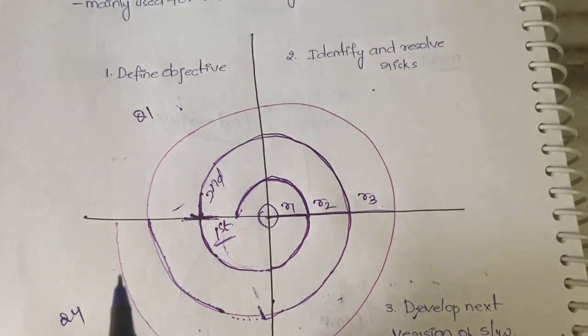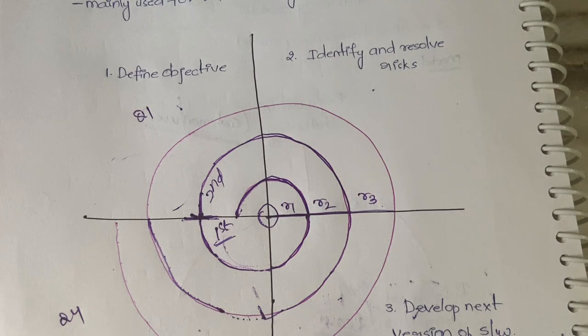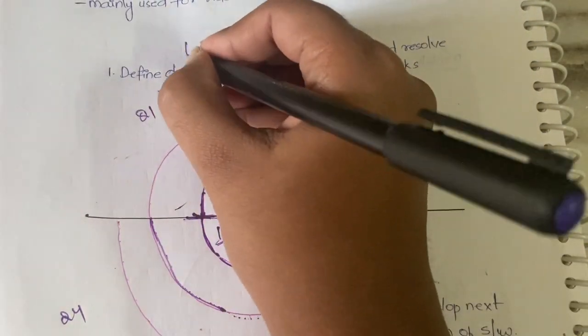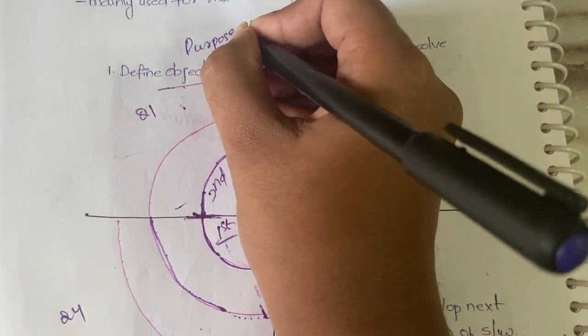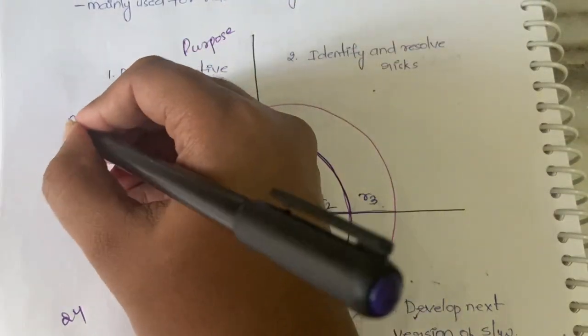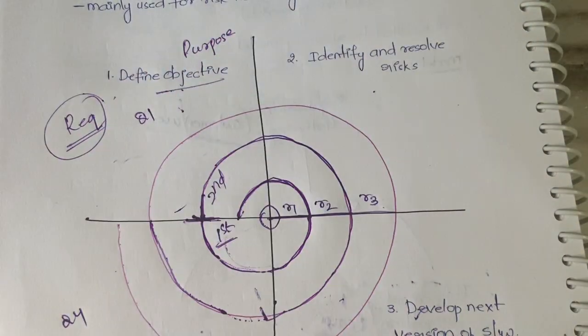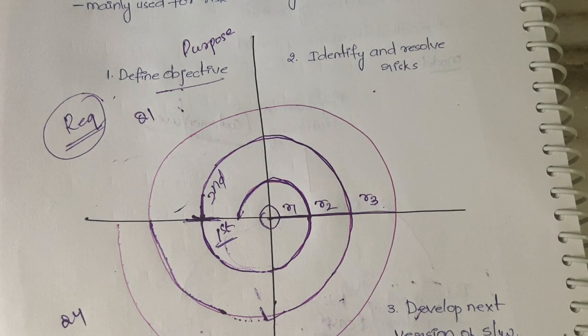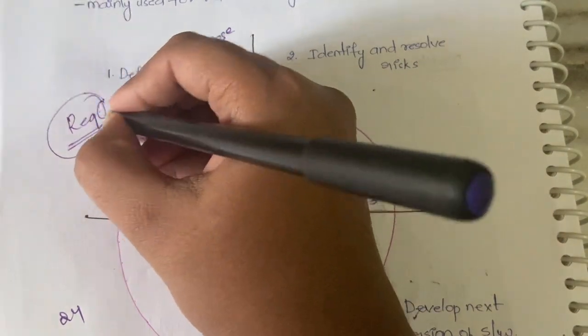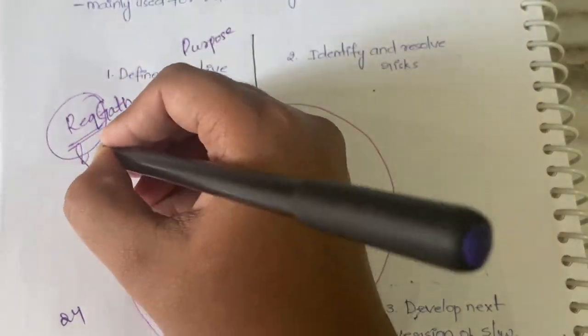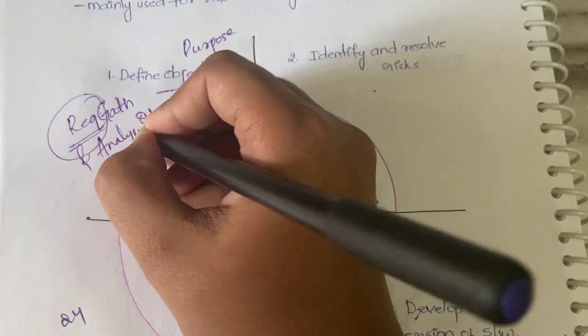First is defining the objective. Defining the objective means the main purpose of the project. Why? How will you be able to define it? Through collecting the requirements, through gathering the requirements, you have to define the purpose of the project, the objective. From there you move to the second stage. So initially what you're doing in the first phase is simply requirement gathering and analysis.